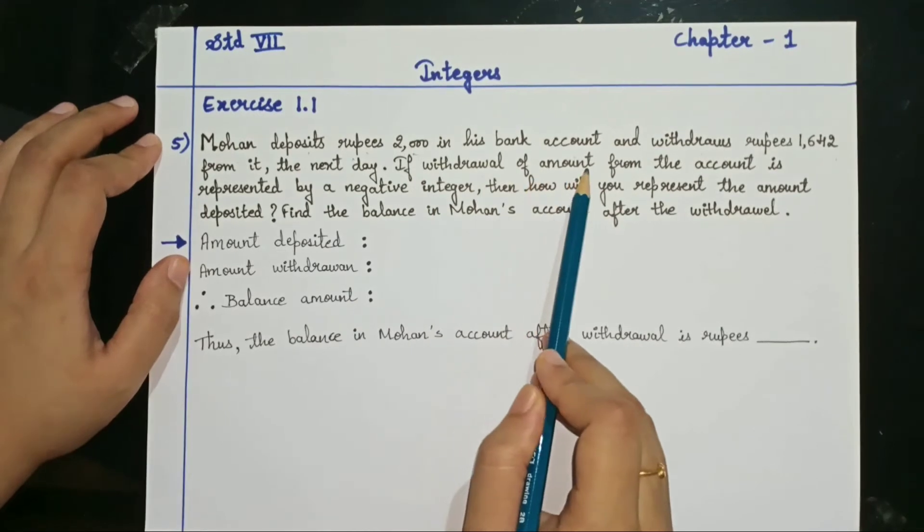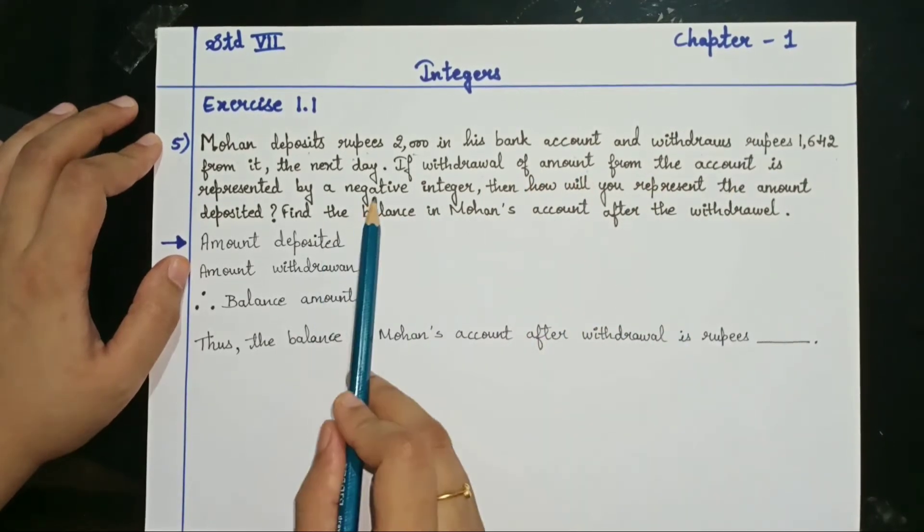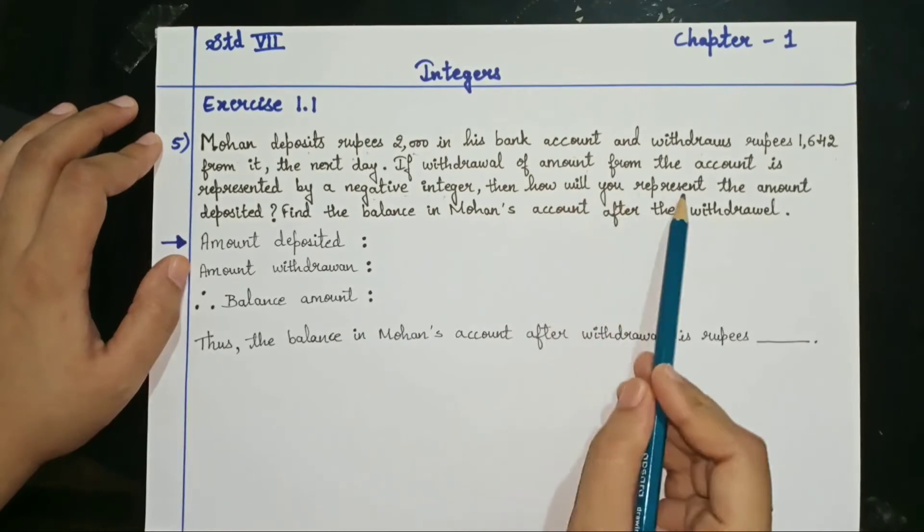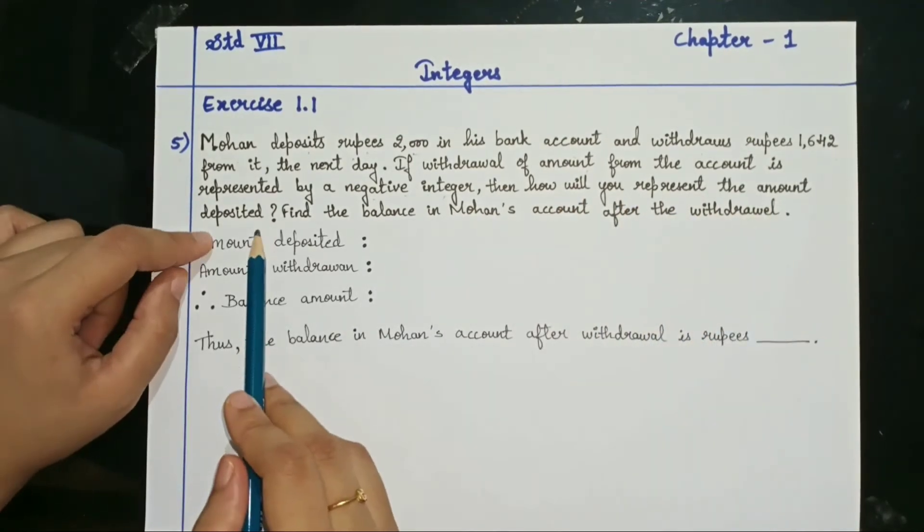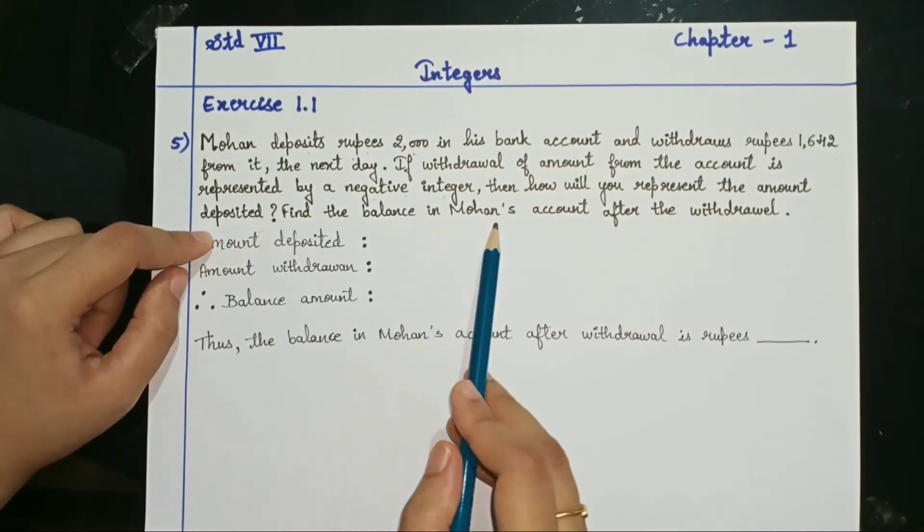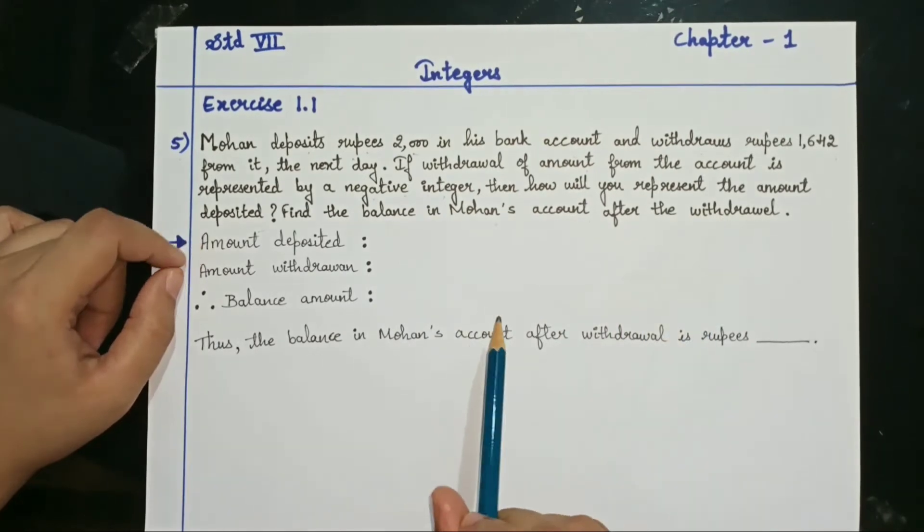If the withdrawal of the amount from the account is represented by a negative integer, then how will you represent the amount that is deposited? Find the balance in Mohan's account after the withdrawal.